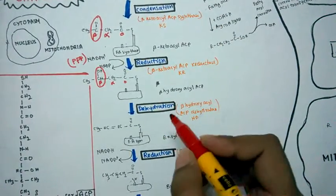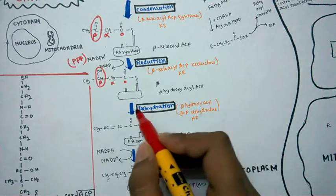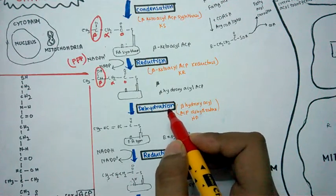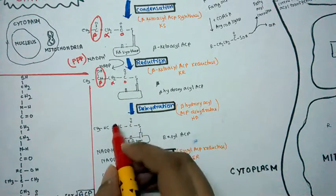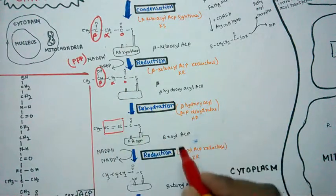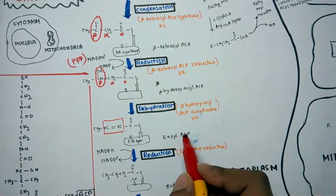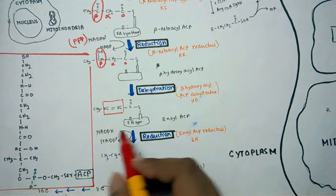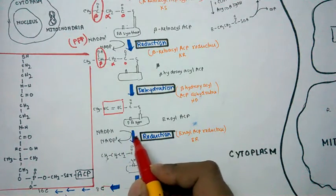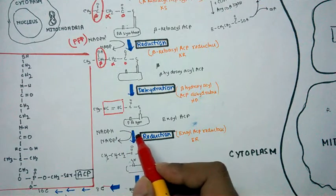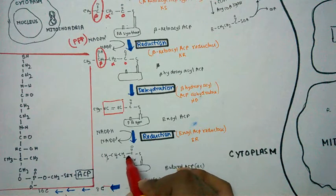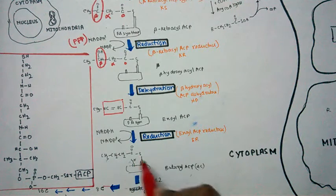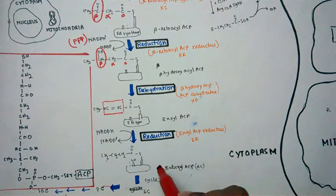The next reaction is dehydration, in which water is expelled and a double bond is formed, producing enoyl-ACP. Then a second reduction reaction takes place, again helped by NADPH from the pentose phosphate pathway, which reduces the double bond to give a butyryl group — producing butyryl-ACP.